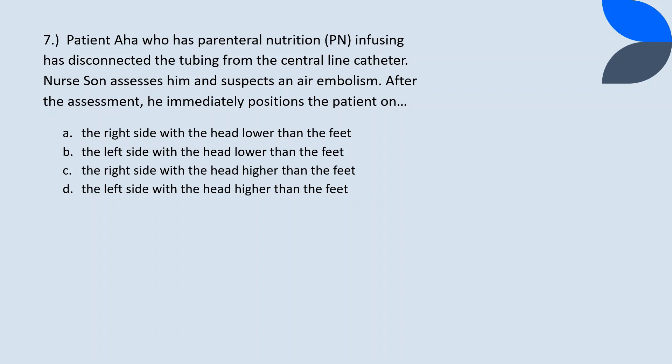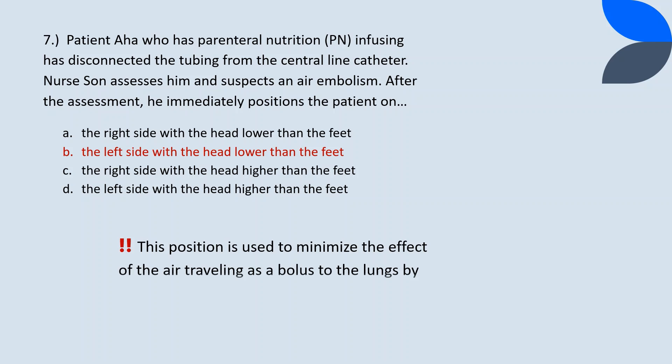Question 7. Patient A, who has parenteral nutrition infusing, has disconnected the tubing from the central line catheter. Nurse Son assesses him and suspects an air embolism. After the assessment, he immediately positions the patient. Air embolism occurs when air enters the catheter system, such as when the system is opened for intravenous tubing changes or when the IV tubing disconnects. Air embolism is a critical situation. If it is suspected, the client should be placed in a left side-lying position and the head should be lower than the feet. This position minimizes the effect of the air traveling as a bolus to the lungs by trapping it in the right side of the heart. Therefore, the correct answer is B.